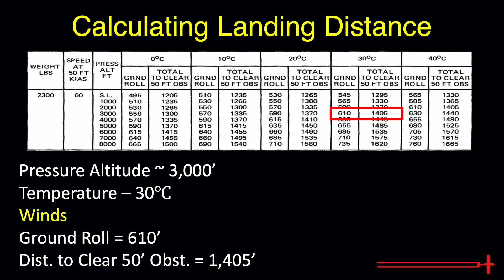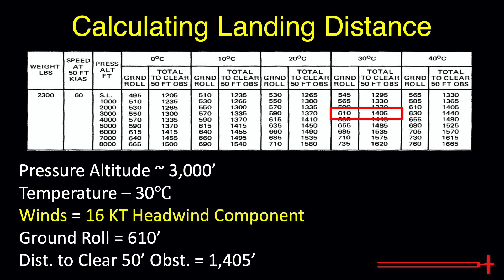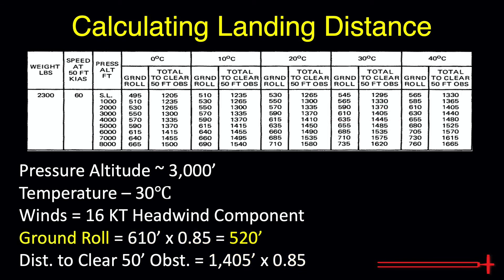For winds, we mentioned at the beginning of the video that we expect a headwind component of 16 knots. Based on that value, we must decrease our expected distances by 15% each — or in other words, multiply these two values by 0.85 — leaving us with adjusted distances of about 520 feet for our expected ground roll and 1,195 feet to clear the 50-foot obstacle.